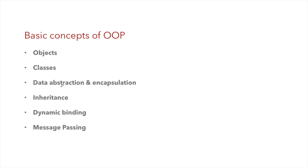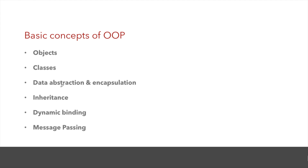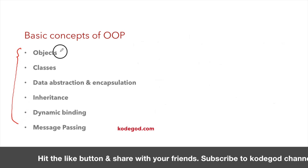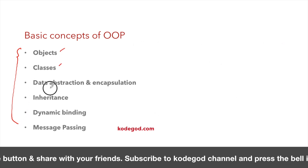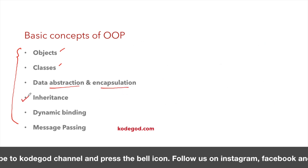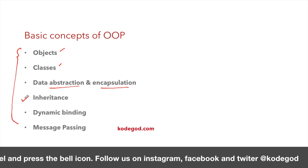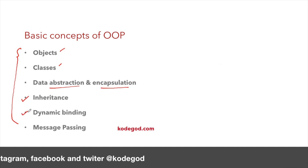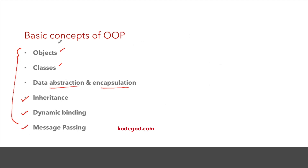The basic concepts of object oriented programming are very important features: objects, classes, data abstraction, encapsulation, inheritance — one of the most important concepts — data hiding, and message passing. We are going to discuss all these features one by one.